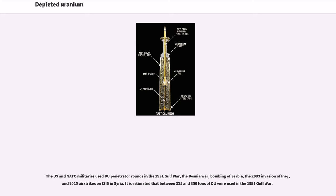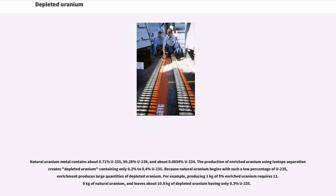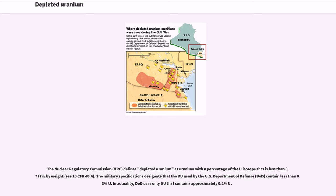It is estimated that between 315 and 350 tons of DU were used in the 1991 Gulf War. Natural uranium metal contains about 0.71% U-235, 99.28% U-238, and about 0.0054% U-234. The production of enriched uranium using isotope separation creates depleted uranium containing only 0.2% to 0.4% U-235. The Nuclear Regulatory Commission (NRC) defines depleted uranium as uranium with a percentage of the U-isotope less than 0.711% by weight; see 10 CFR 40.4.